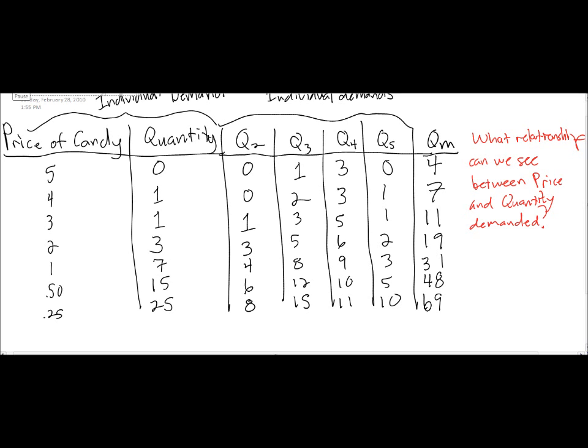It's time to make some observations about our results. The question we want to ask is, what is the relationship that we see between the price of candy bars and the quantity demanded? It should be fairly clear that as the price of candy bars goes down, the quantity demanded of candy bars goes up. At low prices, high numbers of candy bars are consumed, while at high prices, very few candy bars are consumed. We can say, therefore, that according to our demand schedule, there is an inverse relationship between price and quantity demanded.